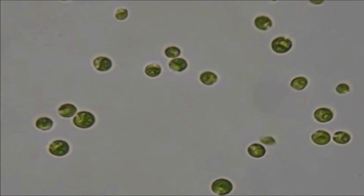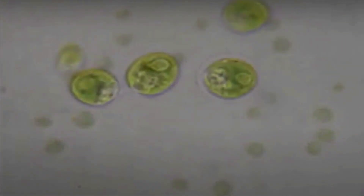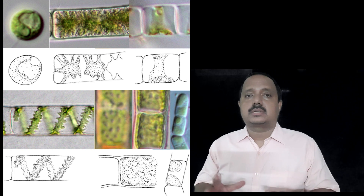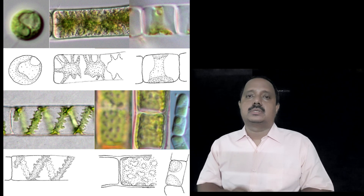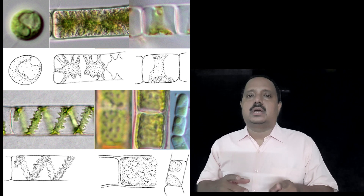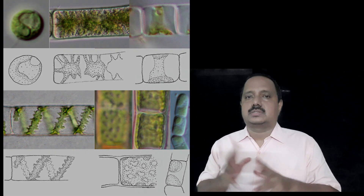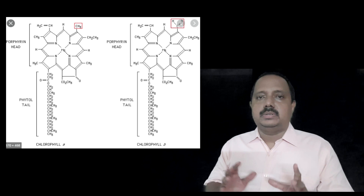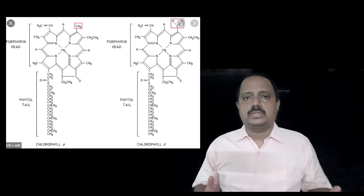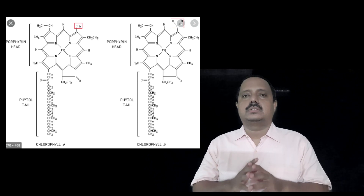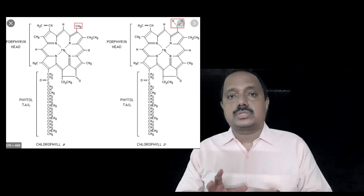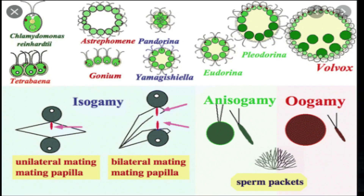The eyespot is located towards the anterior end, just behind the flagella. The photosynthetic pigments are located in the chloroplast, and the chloroplast contains pyrenoids. Pyrenoids are protein bodies that store starch. The main pigments are chlorophyll a and chlorophyll b, which dominate over xanthophylls and carotenoids, making the plant body green in color. Phycobionts are completely absent. The reserve food material is amylose and amylopectin, which are types of starch.